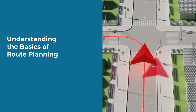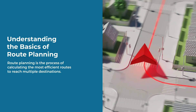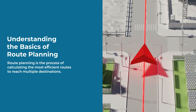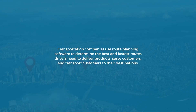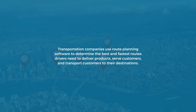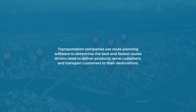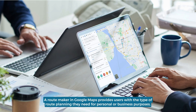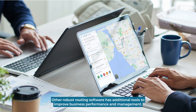Understanding the basics of route planning: route planning is the process of calculating the most efficient routes to reach multiple destinations. Transportation companies use route planning software to determine the best and fastest routes drivers need to deliver products, serve customers, and transport customers to their destinations. A route maker in Google Maps provides users with the type of route planning they need for personal or business purposes. Other robust routing software has additional tools to improve business performance and management.